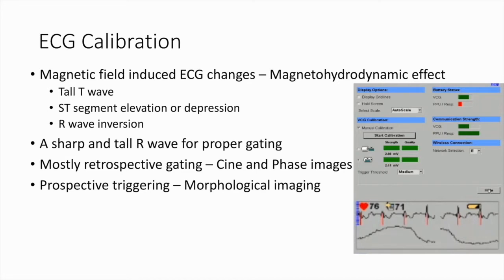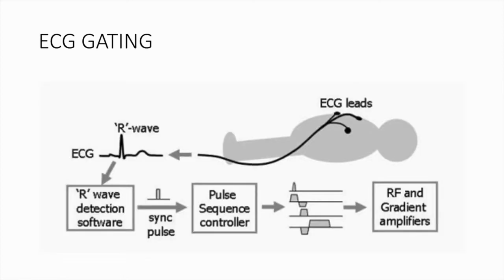The magnetic field induces electrical activity in moving body fluids, which interferes with ECG tracing — this is called the magnetohydrodynamic effect. This produces a tall T wave, ST segment elevation or depression, and R wave inversion. Gating can be either retrospective or prospective. Most cine and phase contrast images use retrospective gating, whereas morphological imaging uses prospective gating. ECG gating identifies the R wave using software and synchronizes the pulse sequences using a controller, providing accurate imaging of the desired cardiac phases throughout the cardiac cycle.